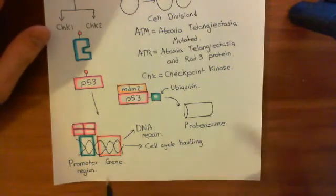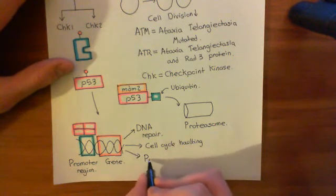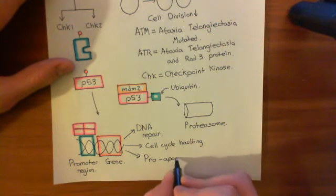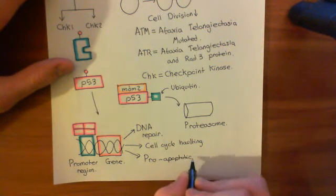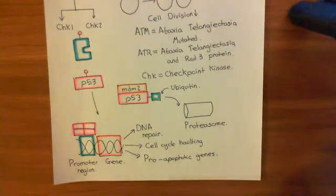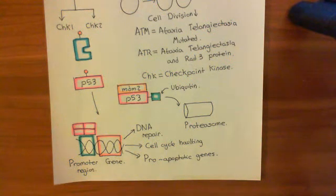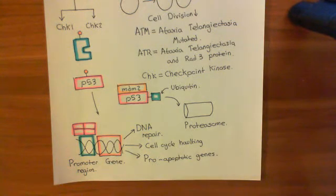So P53 will remain elevated, and this then causes the activation of the expression of proapoptotic genes. We're going to increase the expression of proteins that are going to cause the cell to commit suicide. If P53 is elevated for a long period of time, it activates the expression of other genes which are going to cause the cell to commit suicide. That makes sense because if the DNA damage is not capable of being repaired, then you want the cell to destroy itself, and this will be sensed by the fact that the P53 is continuously high.